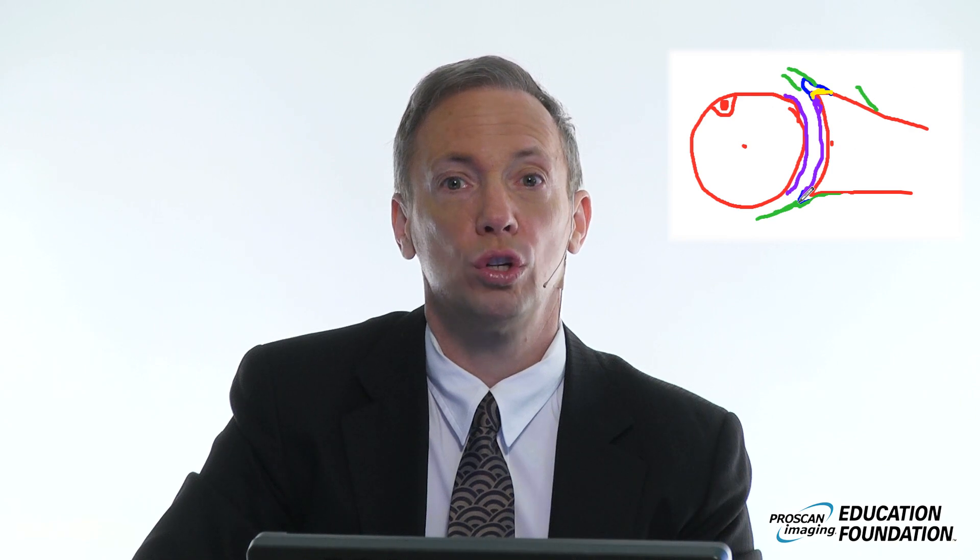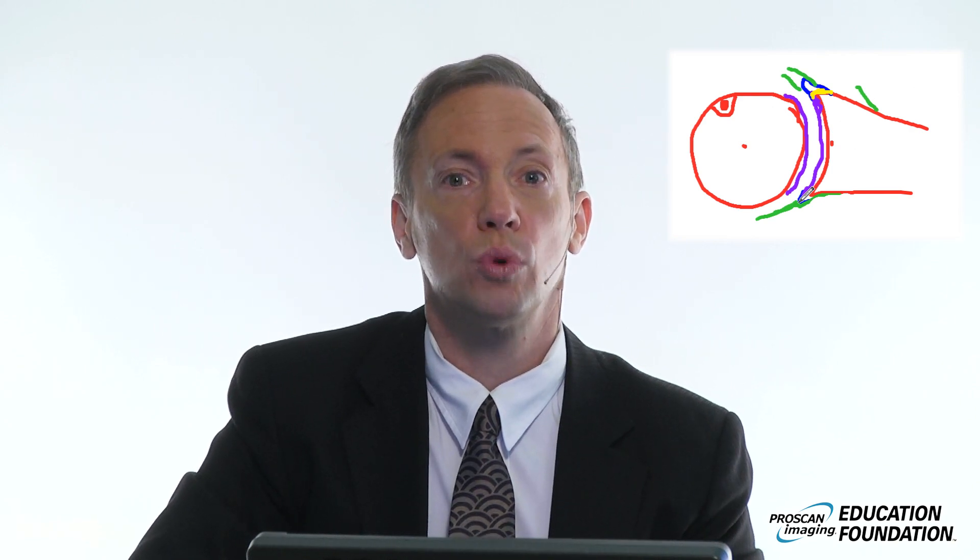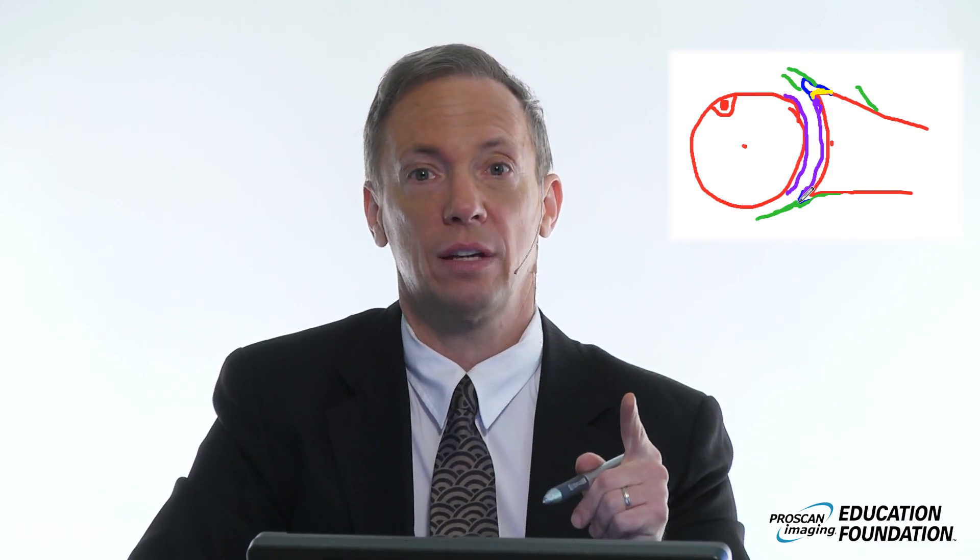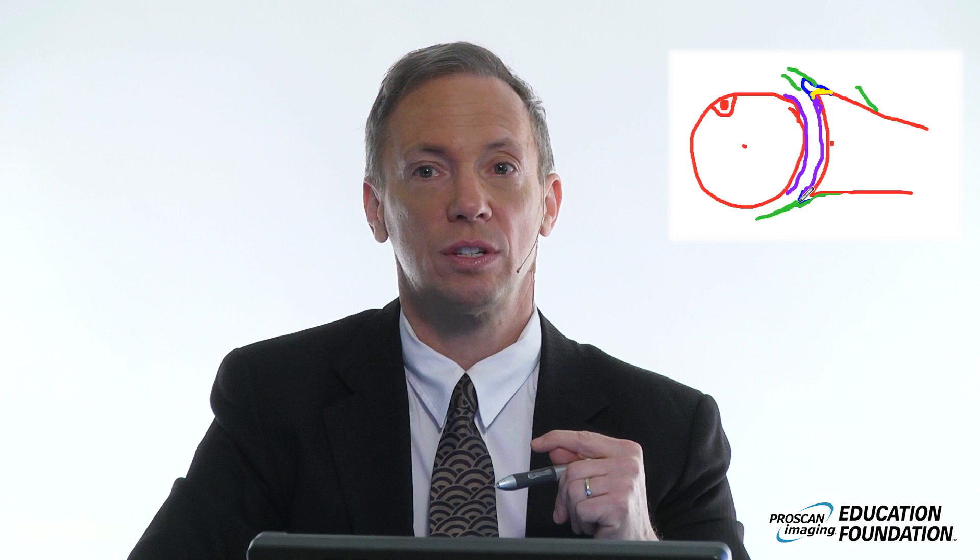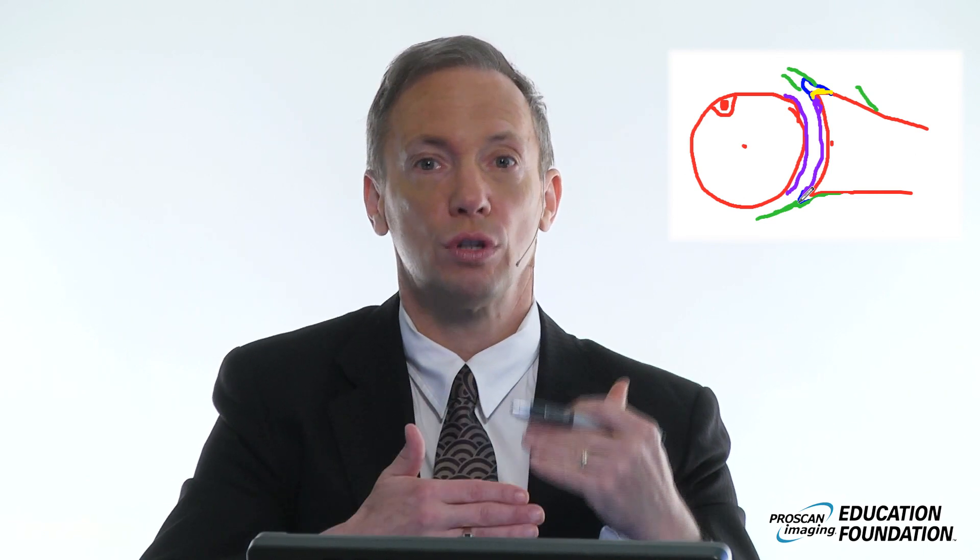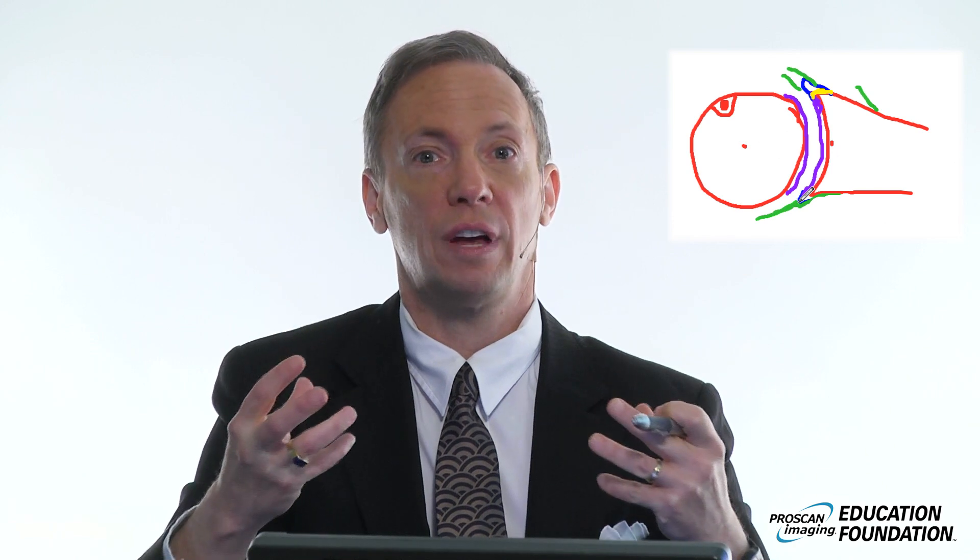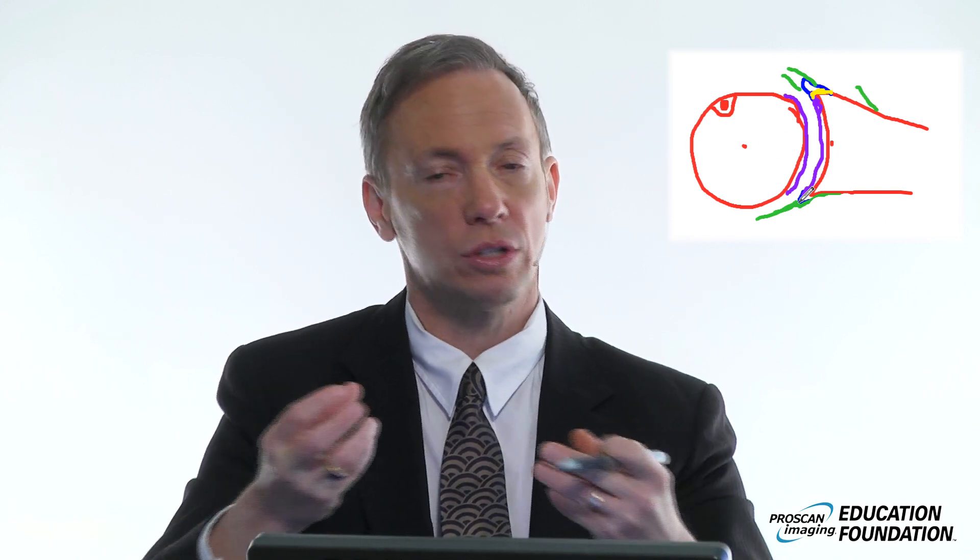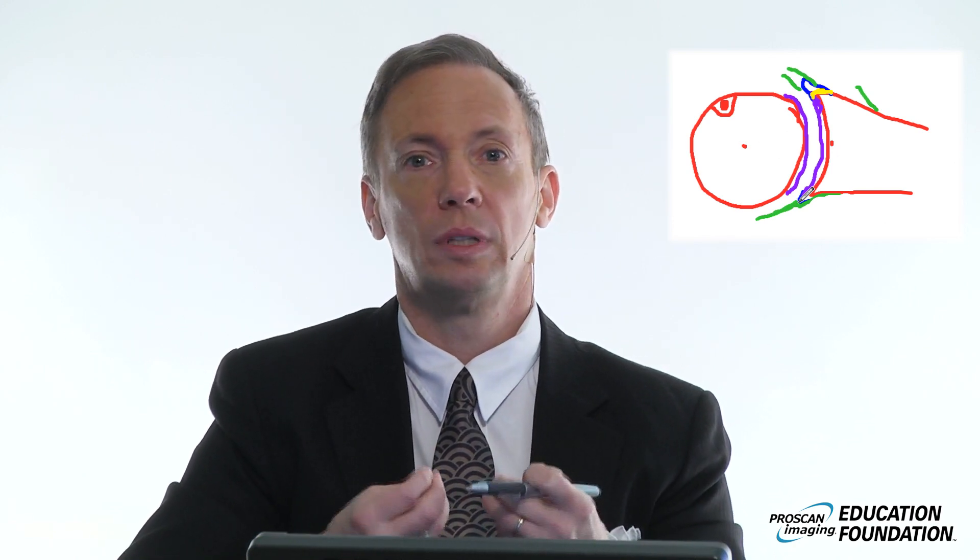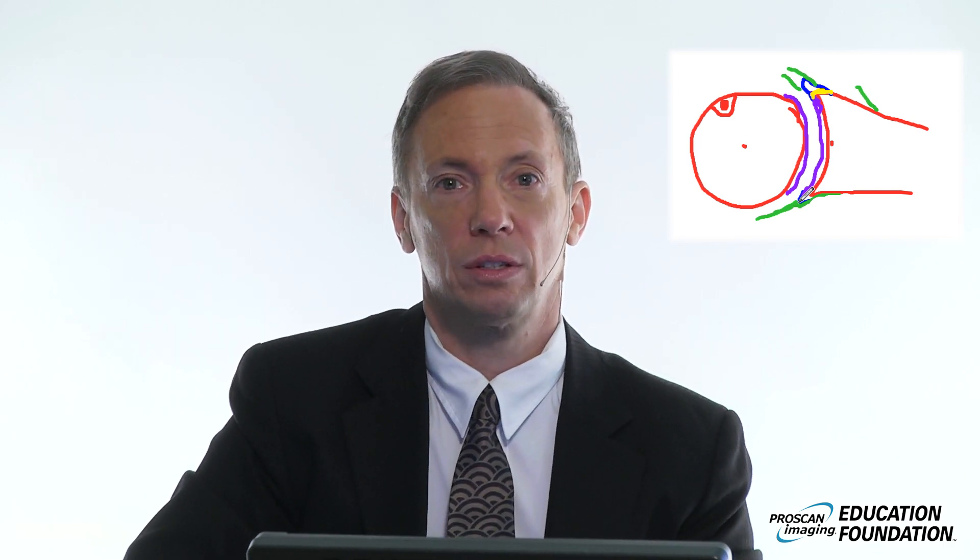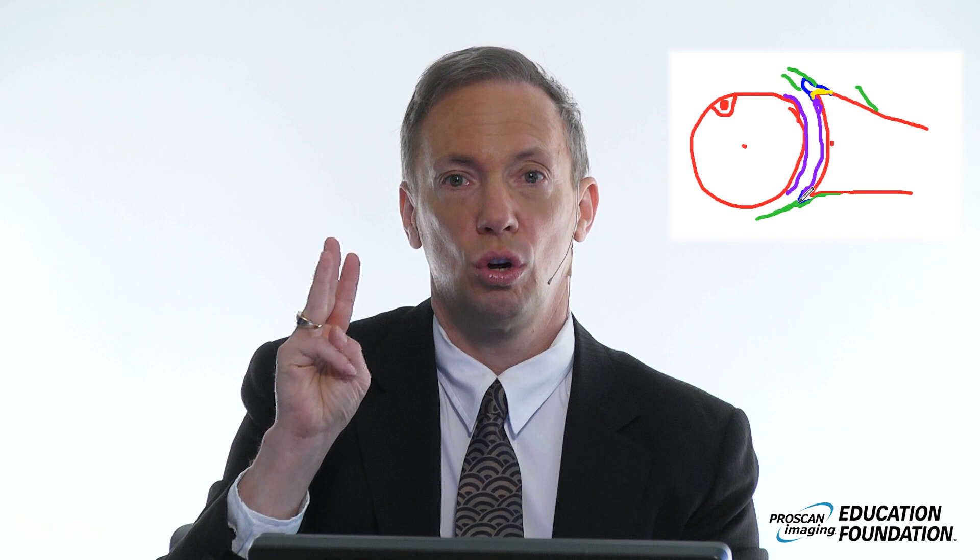Finally, Golden Rule Number Three: the relationship of the ligamentous complex to the labral size is inverse. Larger, thicker, more well-developed ligamentous complex means smaller labrum. Bigger labrum, thinner ligamentous complex. Three golden rules.